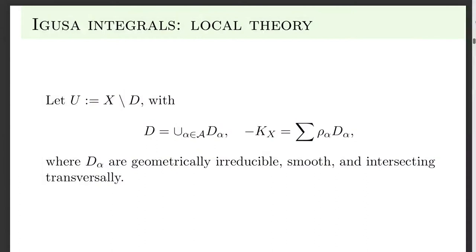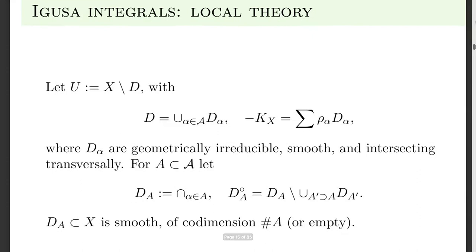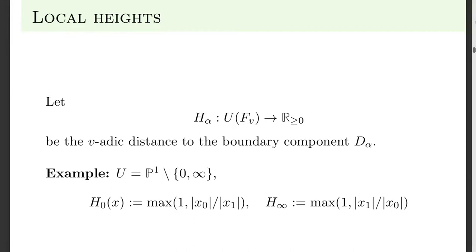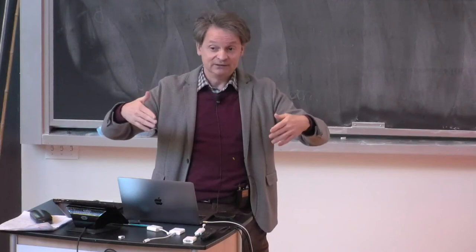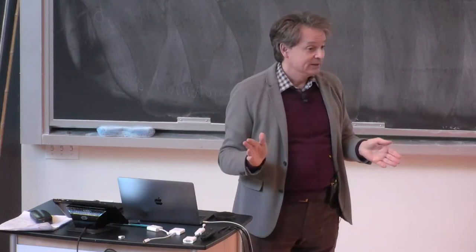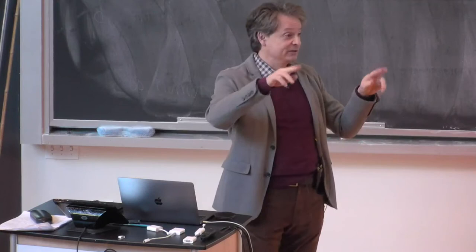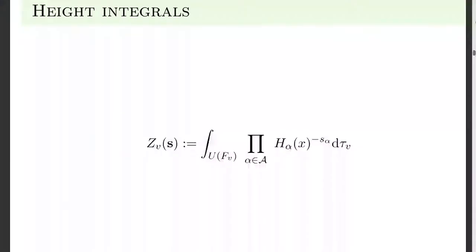We have a stratification by intersections and complements to smaller-dimensional intersections. We're going to introduce functions on our variety — the functions are going to be simply the p-adic distance to the boundary stratum D_alpha raised to a power. As an example, take P1 and remove two points, zero and infinity. I write down h0 and h1 — those are the p-adic valuations, the distance to zero or infinity. In general, distance means you introduce some coordinate and take its p-adic absolute value.